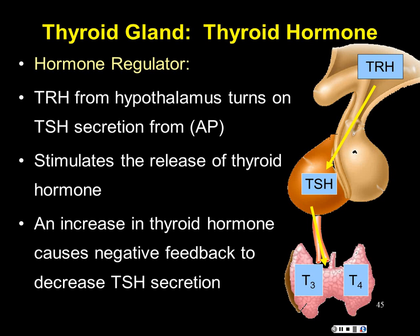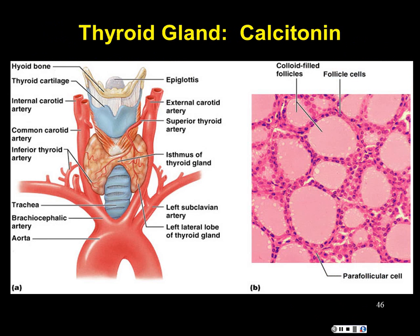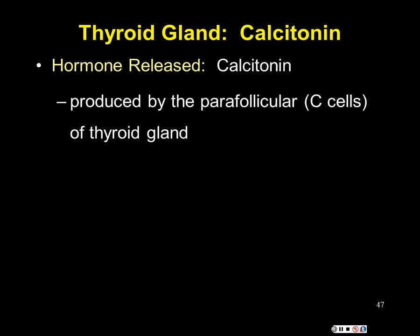The thyroid gland also produces a second hormone called calcitonin, produced not by the follicular cells but by the cells in between them — called parafollicular cells, or C cells, where C represents calcium or calcitonin. These cells are between the follicles and have their own secretory activity. They release calcitonin, which has something to do with calcium.